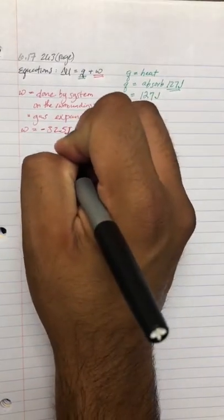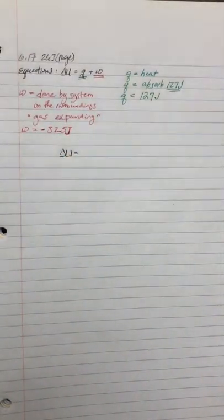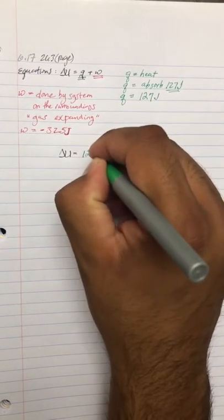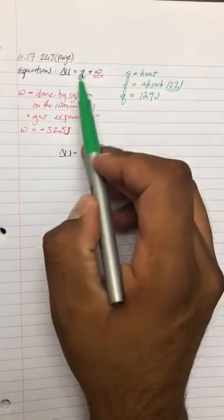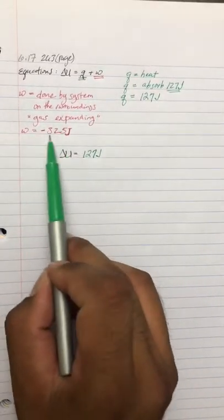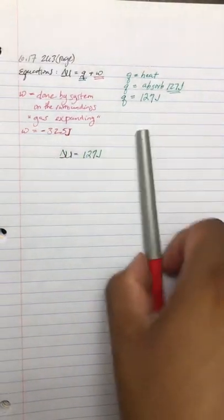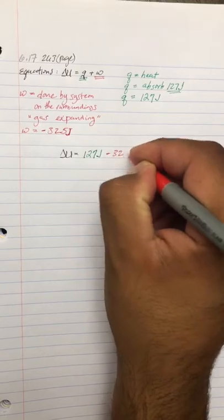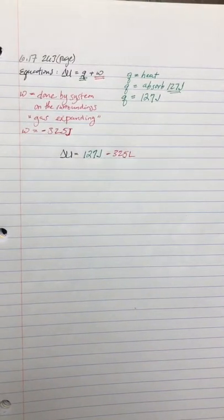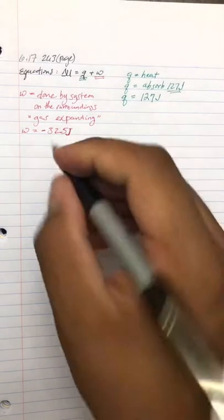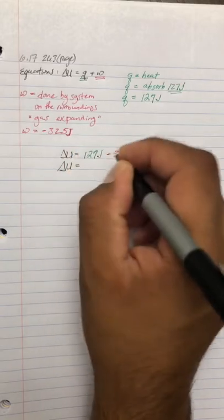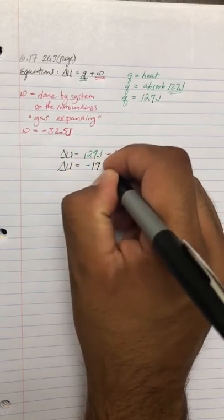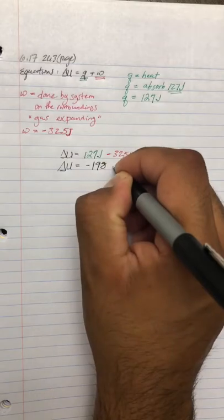Now all we have to do is plug in to determine our delta U. Our delta U is equal to Q, which is going to be denoted in green. It's going to stay positive 127 joules. And we're going to add the work. But here, if you notice, the work is going to be negative. So we're going to subtract 325 joules. As we do so and we do our subtraction, we're going to end up with our answer, which is change in internal energy, which is going to be negative 198 joules.